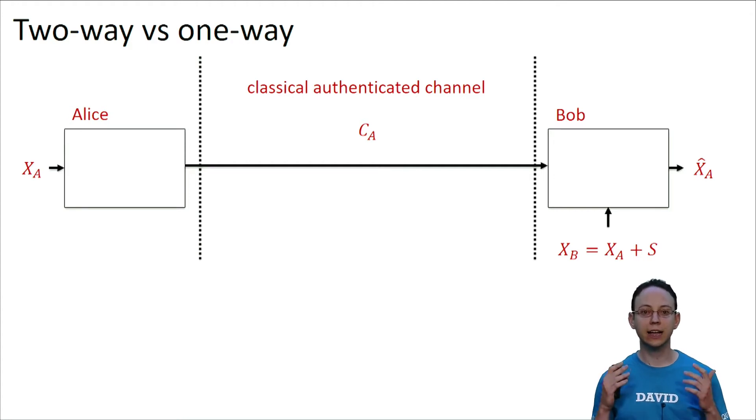In these protocols, we can think of Alice encoding her string xa into ca and sending it through the classical channel. Then Bob decodes xa using both ca and xb. In one-way reconciliation schemes, it is common to call Alice the encoder and Bob the decoder. In the following, I will detail one concrete one-way reconciliation scheme that is not optimal but will give us some insights into how reconciliation protocols work.